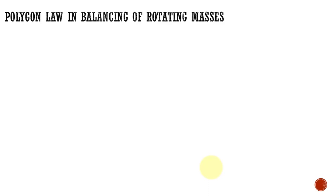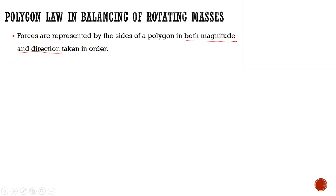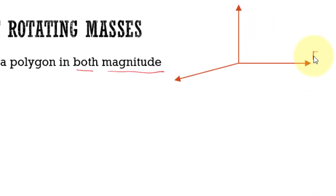Welcome to my lecture. Today we are going to discuss the polygon law and its uses in balancing of rotating masses. The polygon law states that forces are represented by the sides of a polygon in both magnitude and direction, taken in order. We consider the forces as sides of a polygon in both magnitude as well as direction.